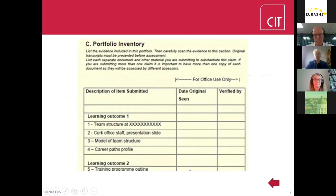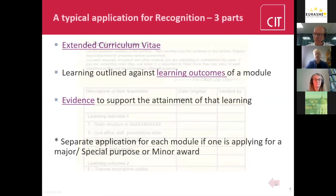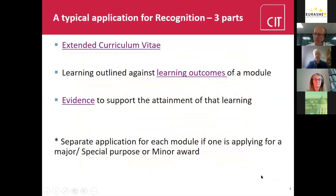The evidence is contained in a portfolio inventory, where they link their evidence to each of the learning outcomes — one piece of evidence could be sufficient for more than one learning outcome. The focus really is on quality rather than quantity. In the case of an application for a major award, special purpose, or minor award, the applicant would present a separate portfolio for each module. For awards based on informal and non-formal learning, that learning is graded and contributes to a classified award.